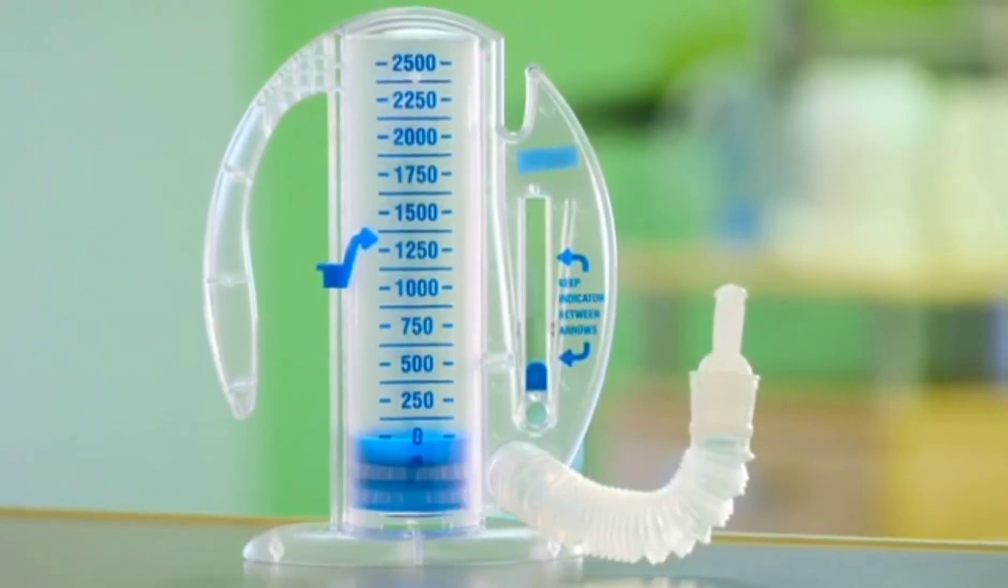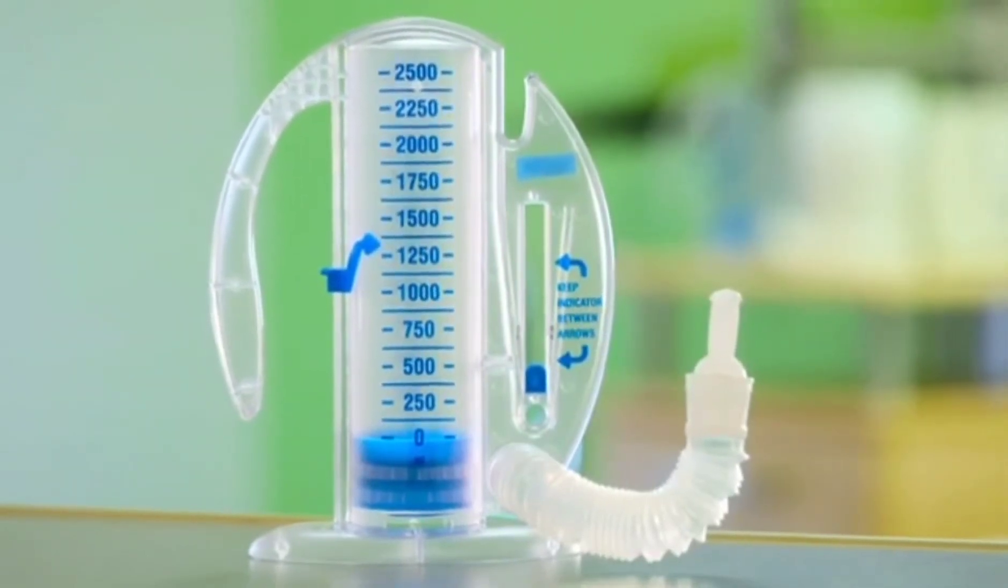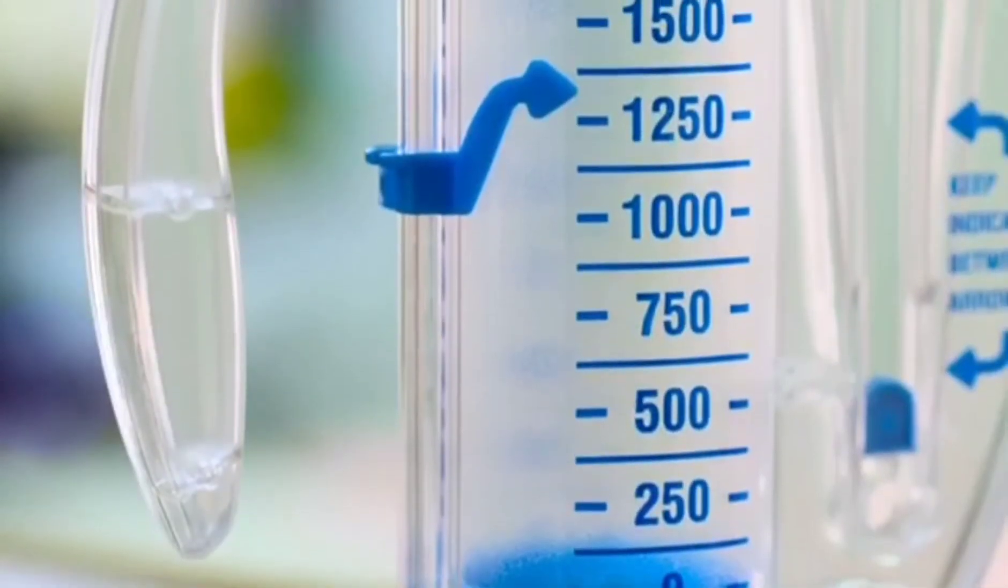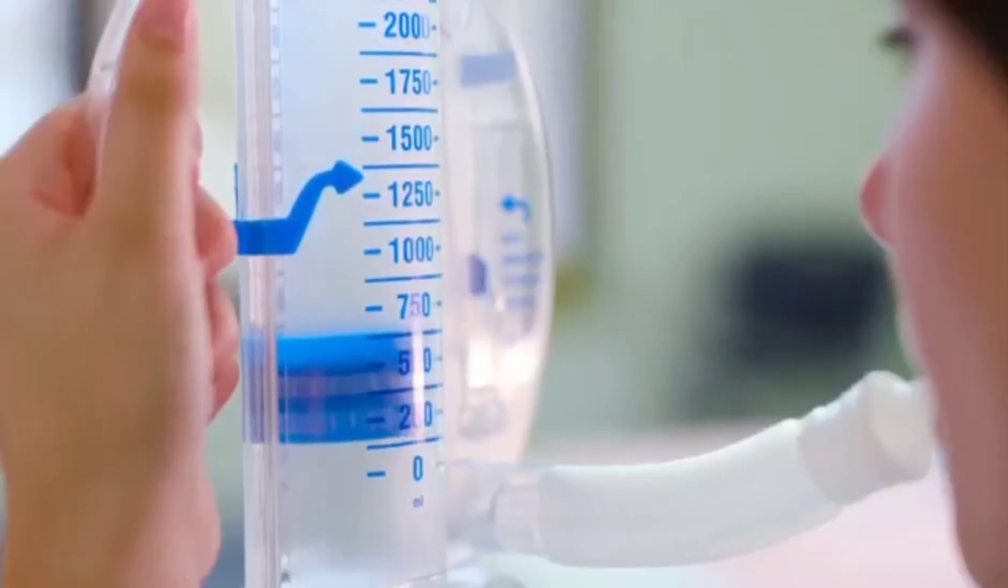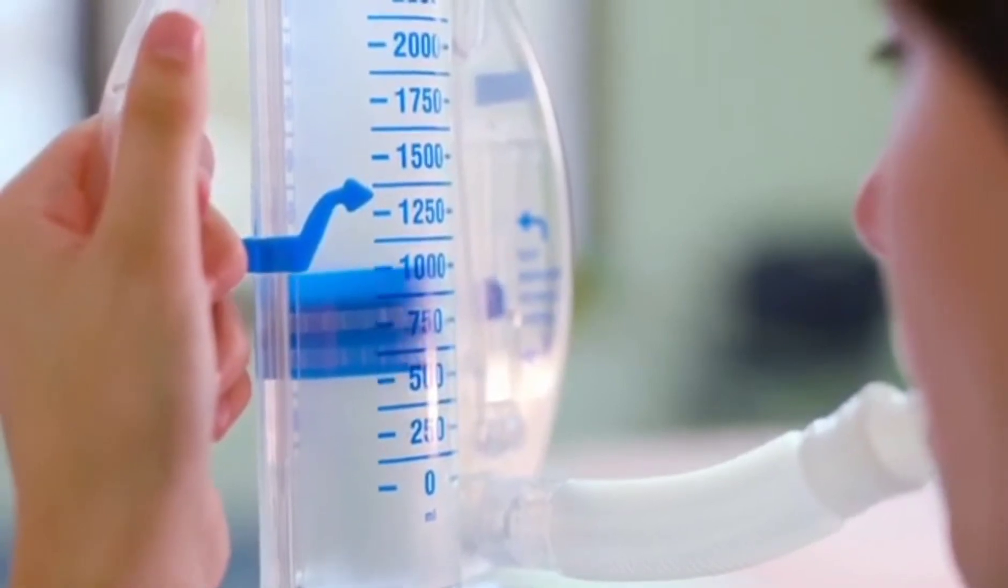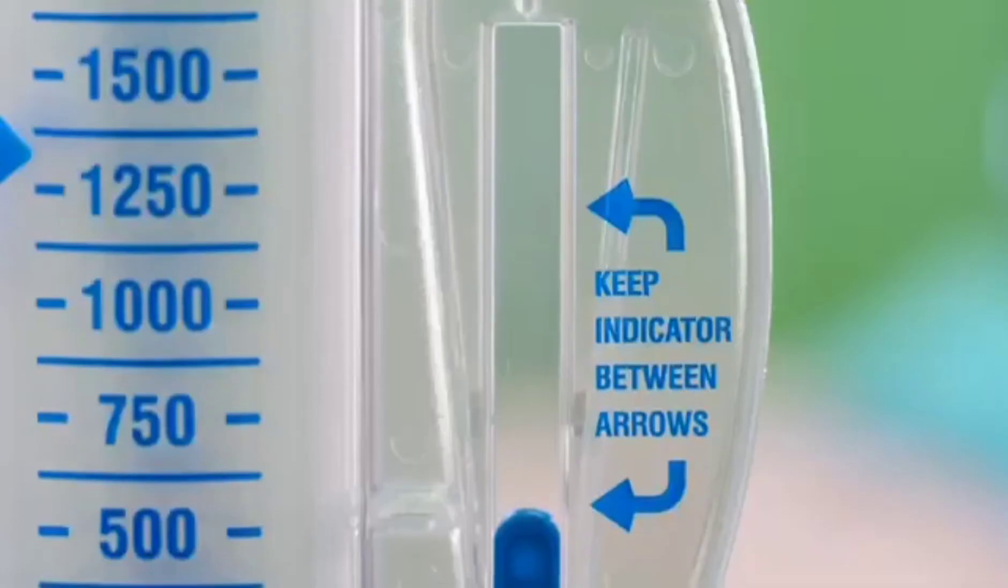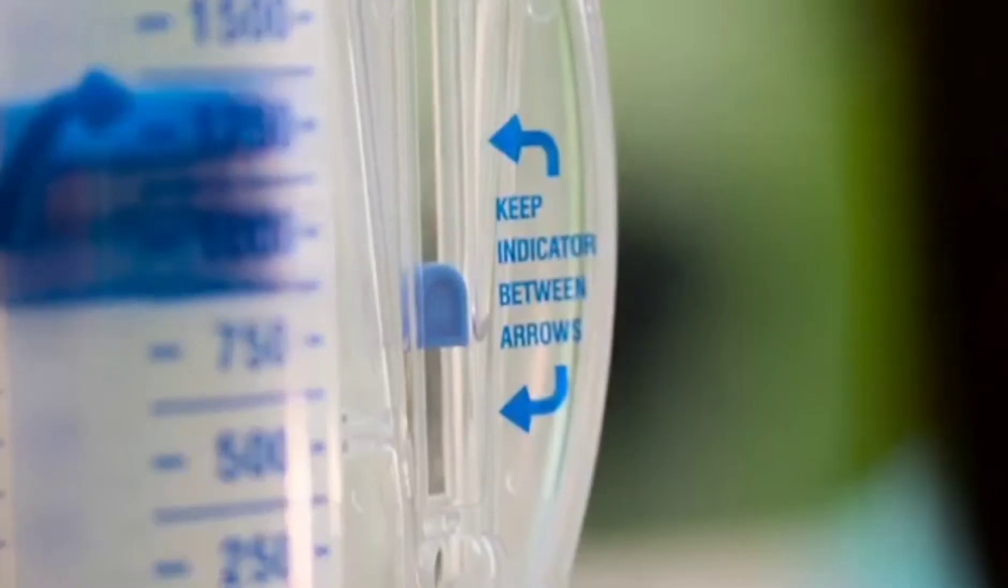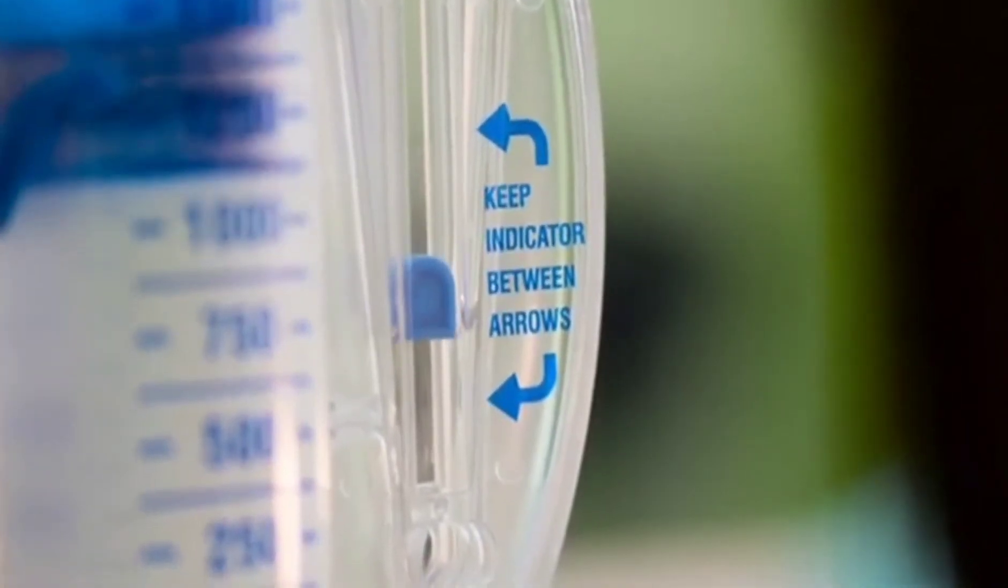An incentive spirometer is made of hollow, clear plastic. It has a tube with a mouthpiece attached. Numbers on the spirometer show how deeply you breathe in. A little disc called a piston moves up and down. The area with arrows or lines on it shows a range. A ball goes up and down in this range to show how slowly you breathe in.